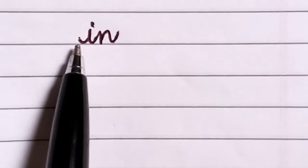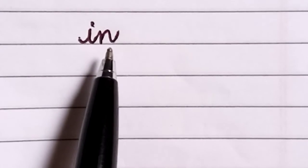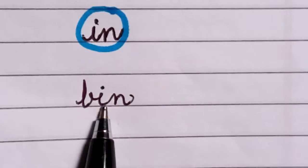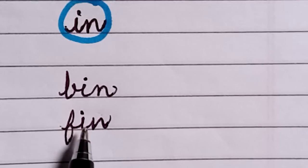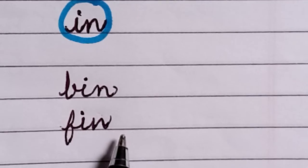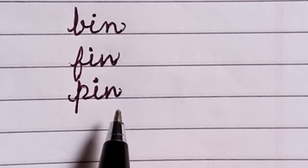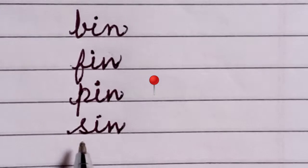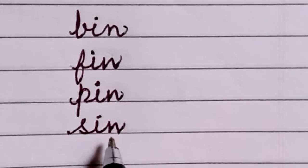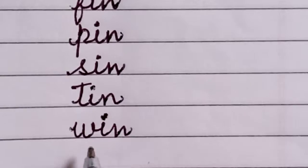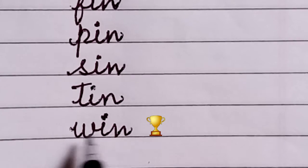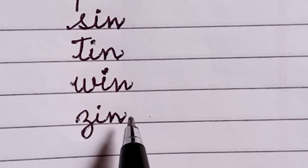Now this will be children. I, N, In. B, I, N, Bin. F, I, N, Fin. P, I, N, Pin. S, I, N, Sin. T, I, N, Tin. W, I, N, Win. Z, I, N, Zin.